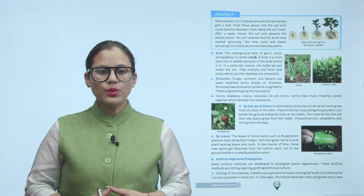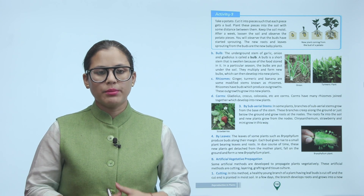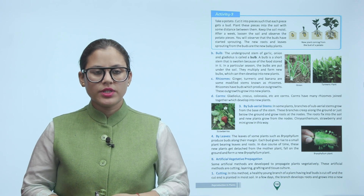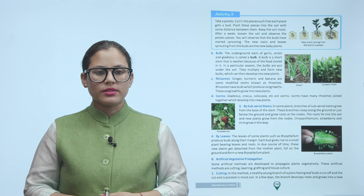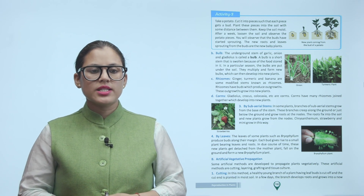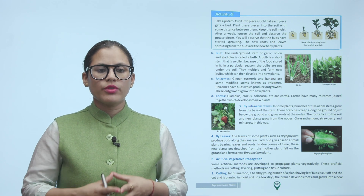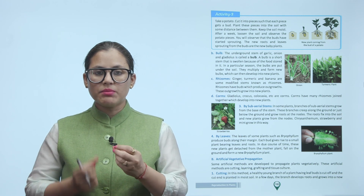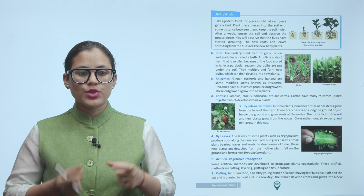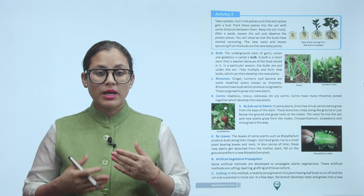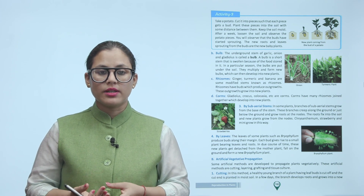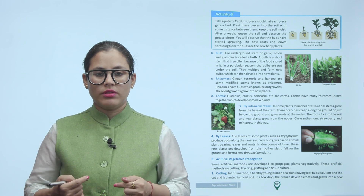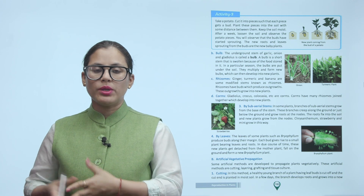Activity 3: Take a potato and cut it into pieces such that each piece has a bud. Plant these pieces in soil with some distance between them. Keep the soil moist. After a week, loosen the soil and observe the potato pieces — you will observe that the buds have started sprouting. The new roots and leaves sprouting from the buds are the new baby plants.